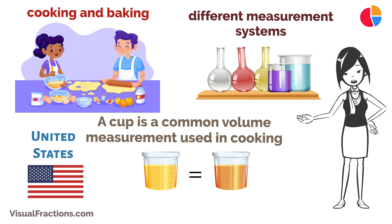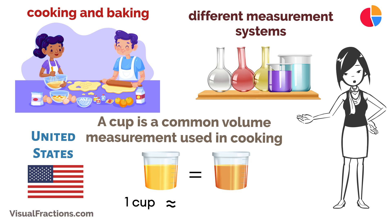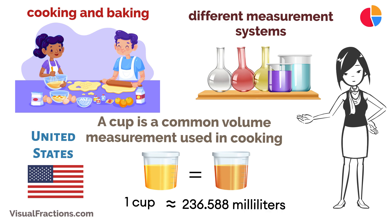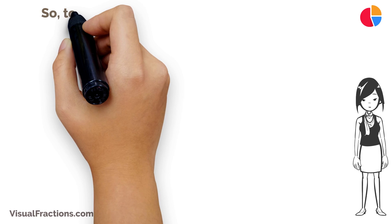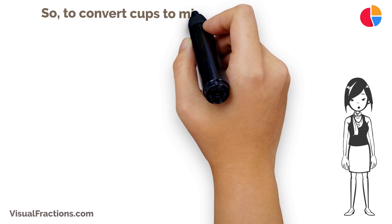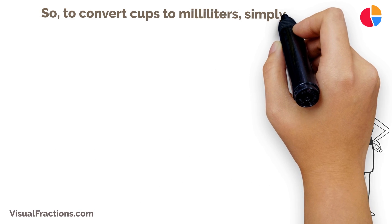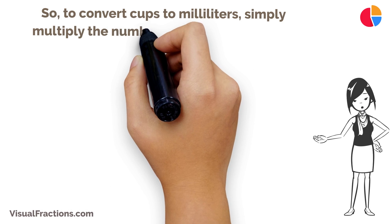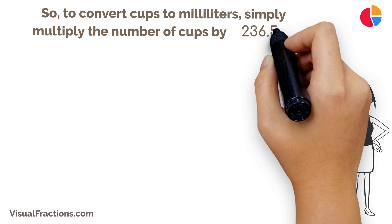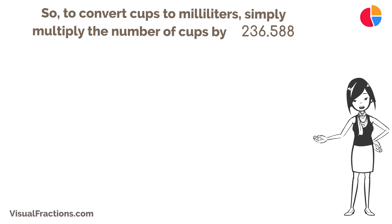Here's what you need to know. One cup is equal to approximately 236.588 milliliters. So to convert cups to milliliters, simply multiply the number of cups by 236.588.